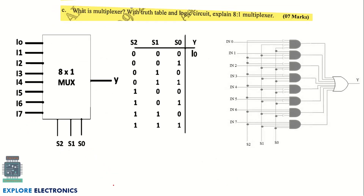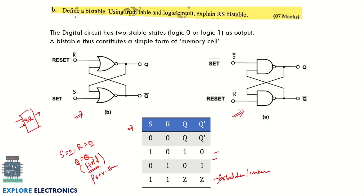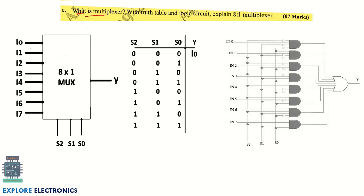The next question asks what a multiplexer is, and with a truth table and logic circuit, explain an 8-to-1 multiplexer. First define the multiplexer: it is a device with multiple inputs and a single output that selects one input out of many, also called a data selector. Then draw the truth table for an 8-to-1 multiplexer using three select lines and fill in I1 through I8, followed by the logical circuit.